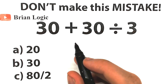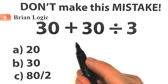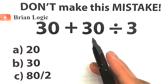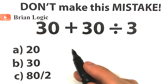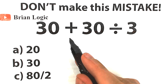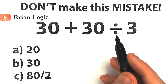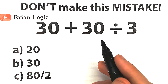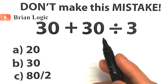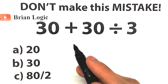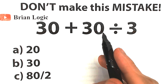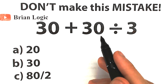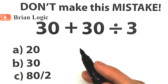Welcome back to my channel BrainLogic. Let's figure out this super simple math problem right here. What we have is 30 plus 30 divided by 3. Seems pretty basic, seems pretty easy — everyone learns this stuff in the third grade. We have only addition, we have only division, so that's fantastic.